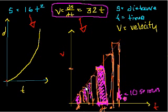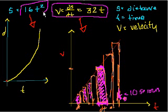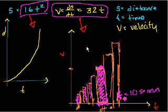And you'll approach two things. You'll approach the area under this curve — almost the exact area under this curve — and you'd also get almost the exact value of the distance after, say, 10 seconds. But 10 didn't have to be an exact number; it could have been a variable. So this is something pretty interesting. All of a sudden, we see that the antiderivative is pretty similar to the area under the curve, and it actually turns out that they're the same thing. And this is where I'm going to teach you the definite integral.